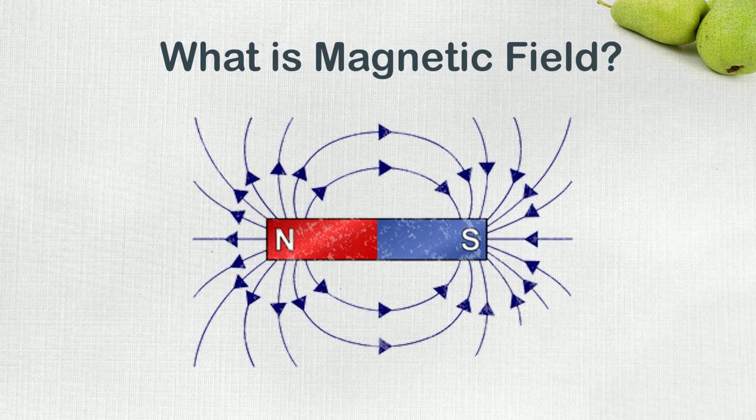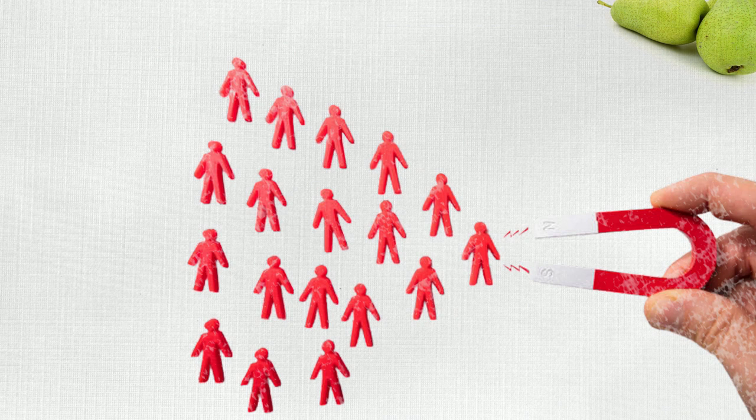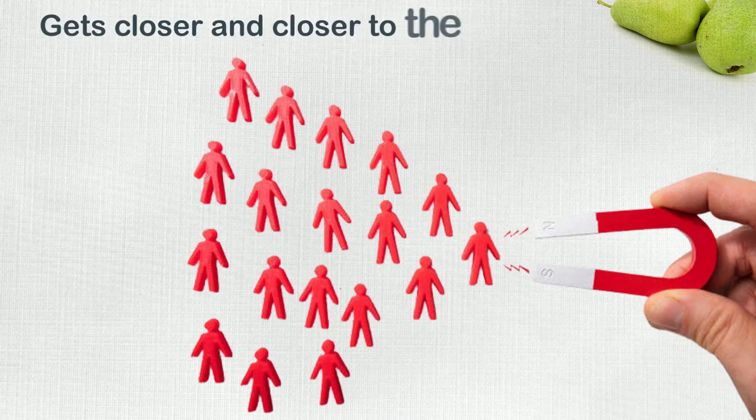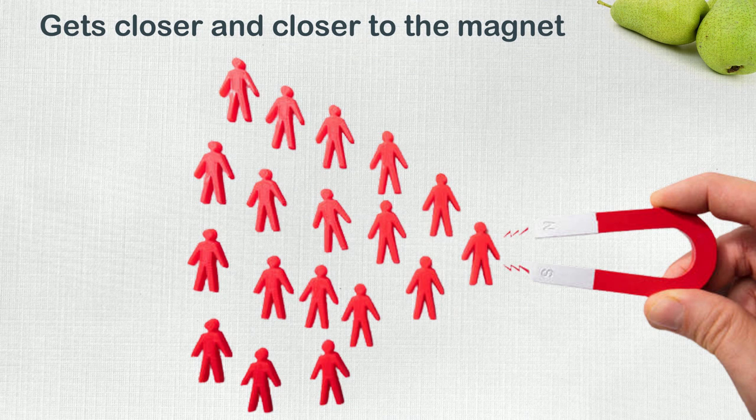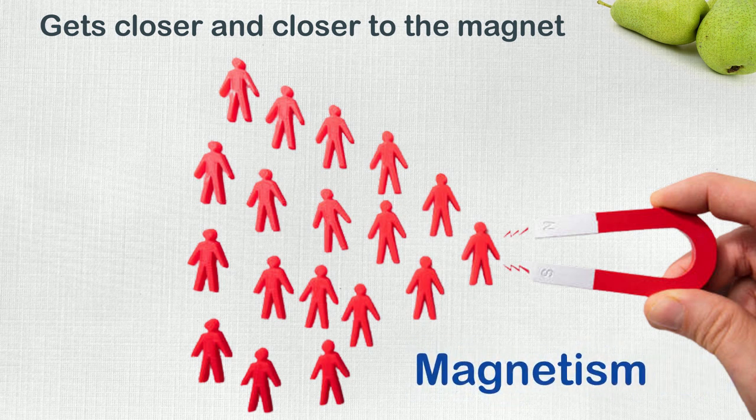What is magnetic field? When a magnetic material gets closer and closer to the magnet, the power of the magnet on the object, as we call magnetism, becomes stronger and stronger.